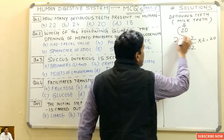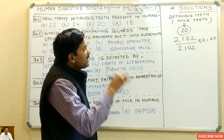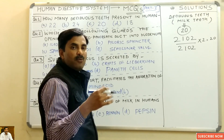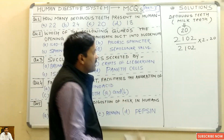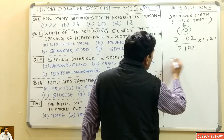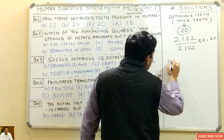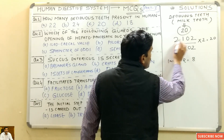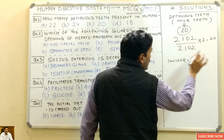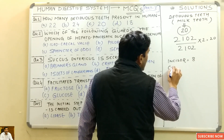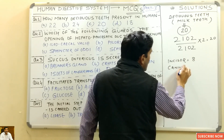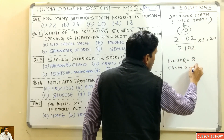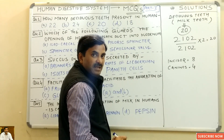Out of these 20 deciduous teeth, you must also know how many are incisors, canines, and molars. The number of incisors is 8 (2 per quadrant × 4 quadrants). The number of canines is 4 (1 per quadrant × 4 quadrants).